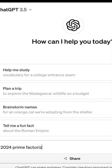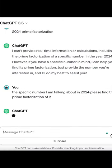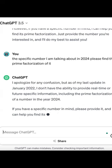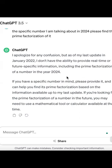ChatGPT, find the prime factorization of 2024. So apparently, you have to be in the year 2024 in order to find the prime factorization of 2024.